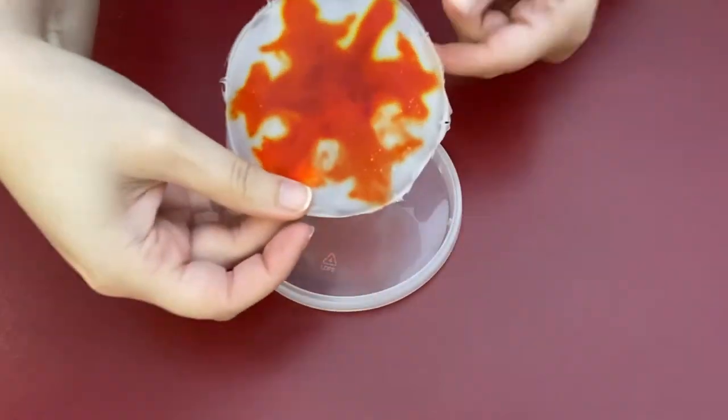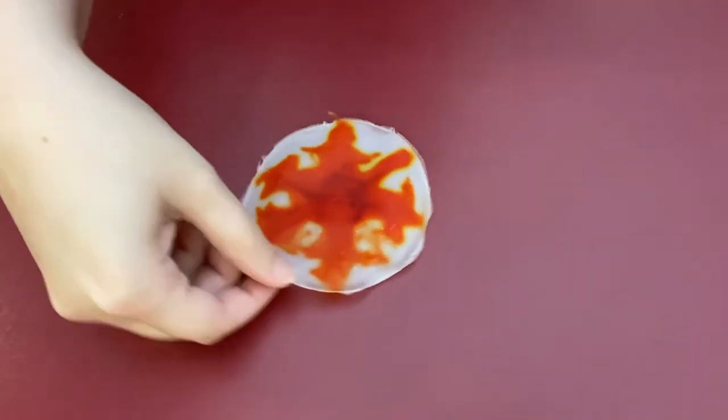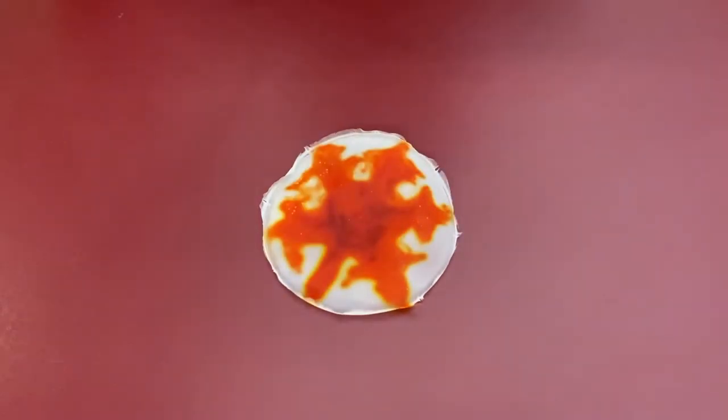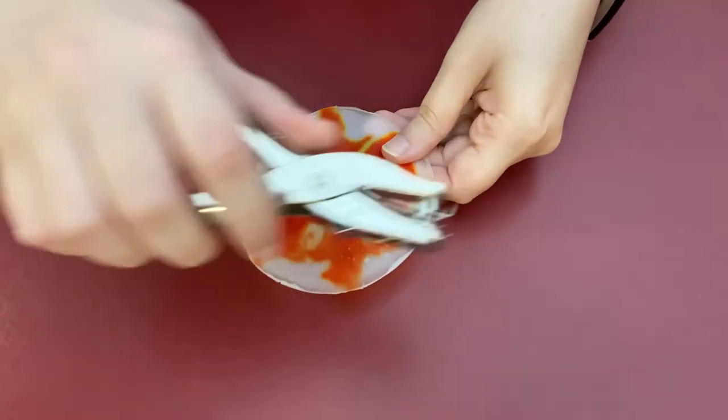Lastly, when your suncatcher is dry, peel it off the lid. You'll know it's completely dry when the glue turns from white to clear.